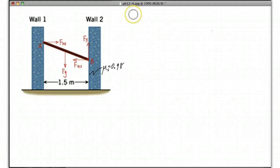Okay, let's look at this question from the book, number 27. It says the two vertical walls are separated by a distance of 1.5 meters.